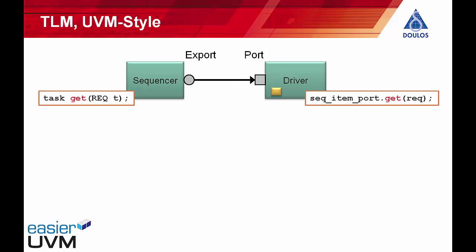Transaction level modeling, UVM style, reduced to its bare essentials, means communicating using function calls. We communicate between the building blocks or components in our UVM verification environment by making a task or function declared in one component available for being called from another component. Theoretically there's nothing to stop the driver calling the get task from the sequencer directly, but that would create a dependency between the driver and the sequencer and make the code hard to maintain. In UVM we do the connections indirectly through so-called ports and exports — nomenclature borrowed from SystemC.